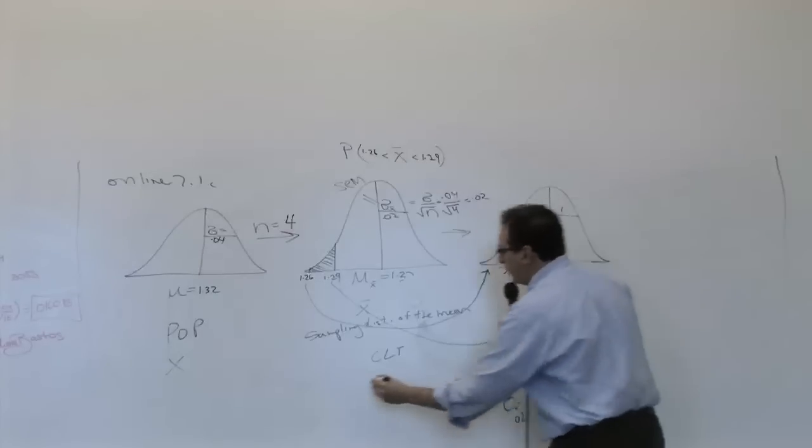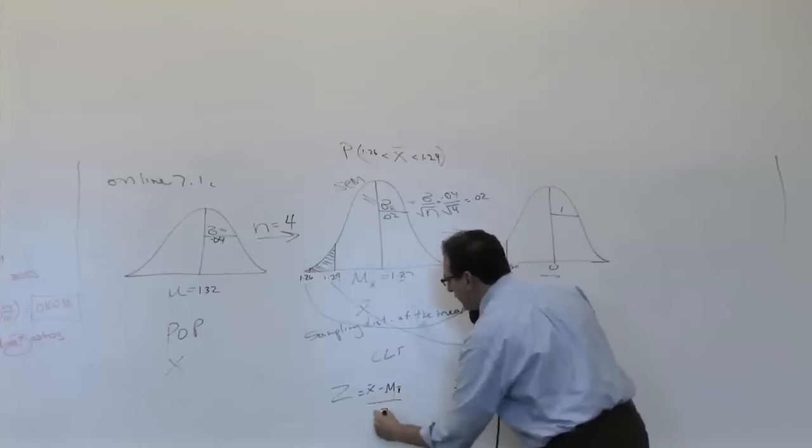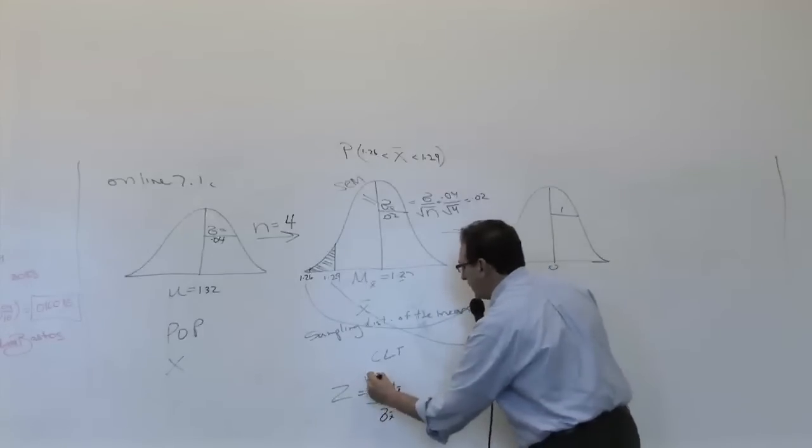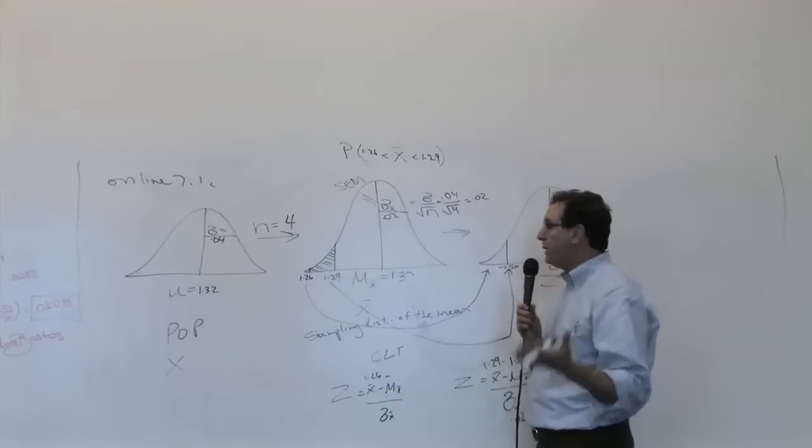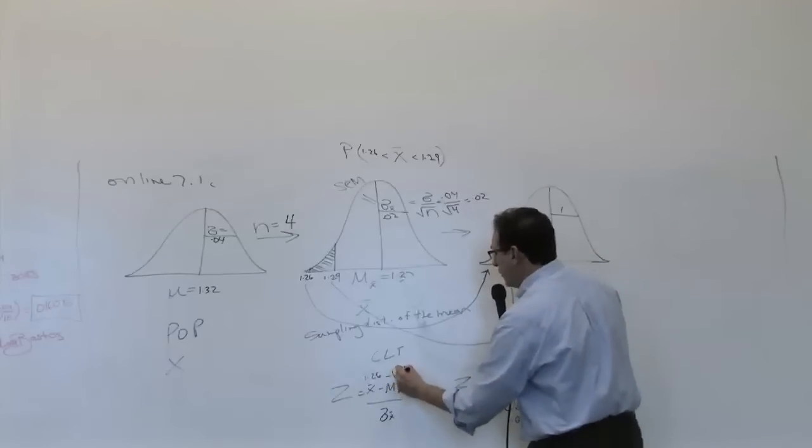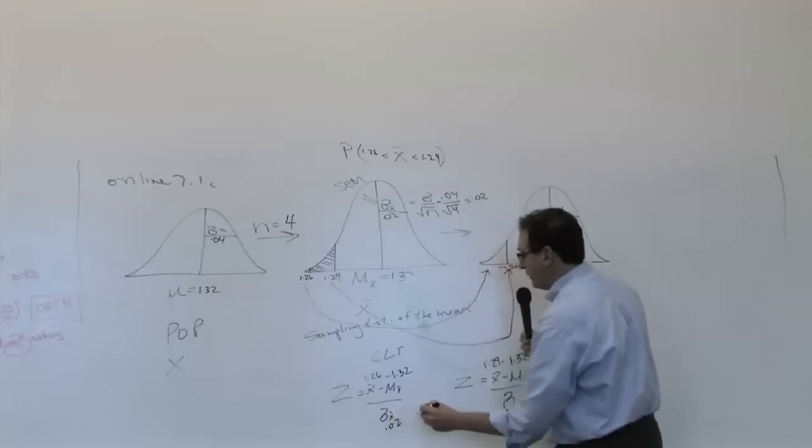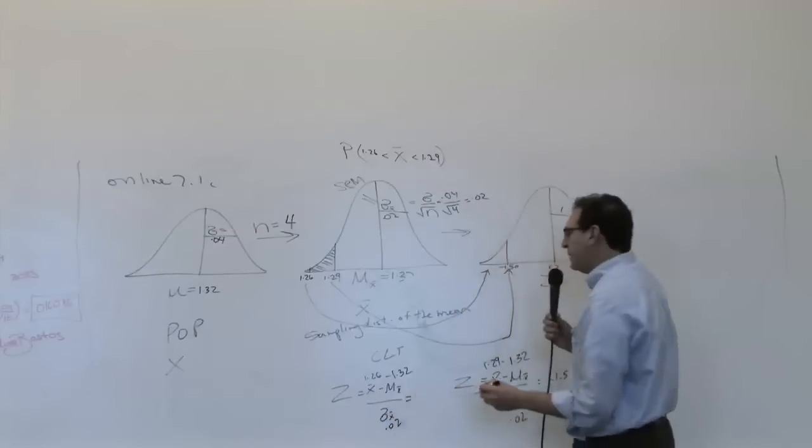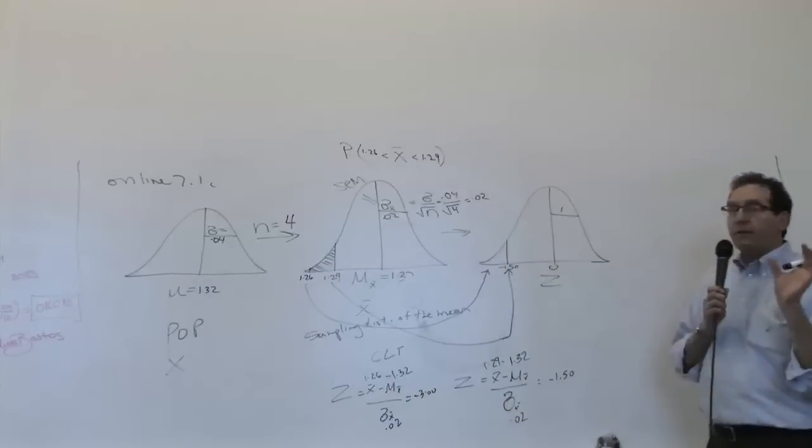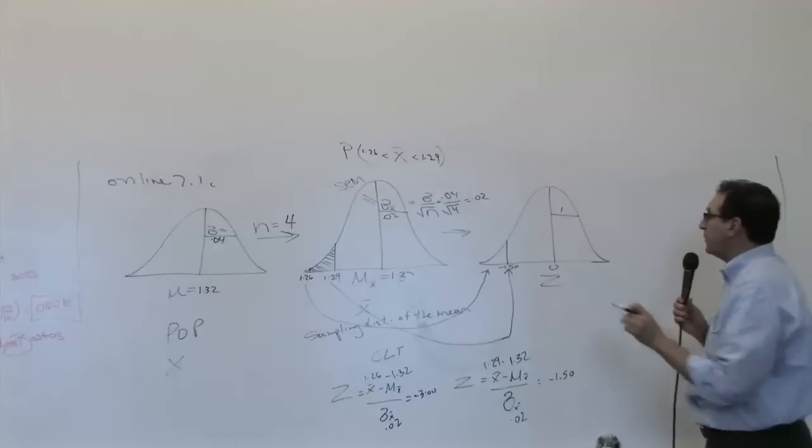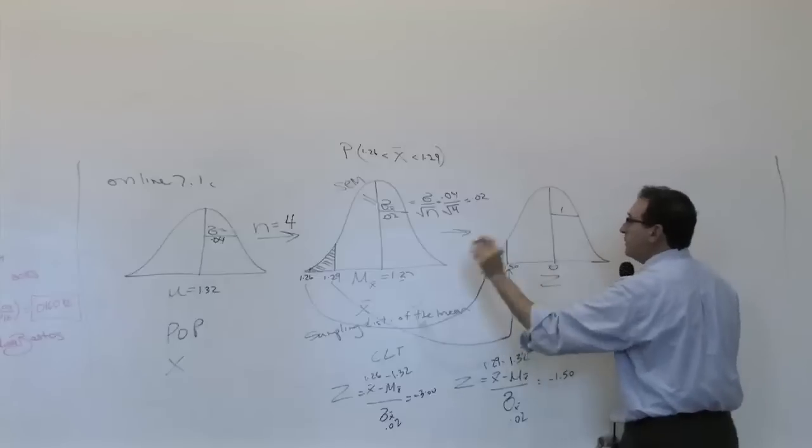Then you do the same exact thing for the 1.26 now: x-bar minus mu of x-bar over sigma of x-bar. Again, I hope you realize this is essentially using Chapter 6. If you know Chapter 6, Chapter 7 is a breeze. 1.32 is still the ideal middle value, 0.02 is the standard error of the mean. This comes out to minus 6 over 2, which is minus 3.00. Notice I'm taking it to two decimal places, because that's how the z-table works. So here's minus 1, here's minus 2, here's minus 3, so we're talking about a number a little bit towards the outside of the graph.